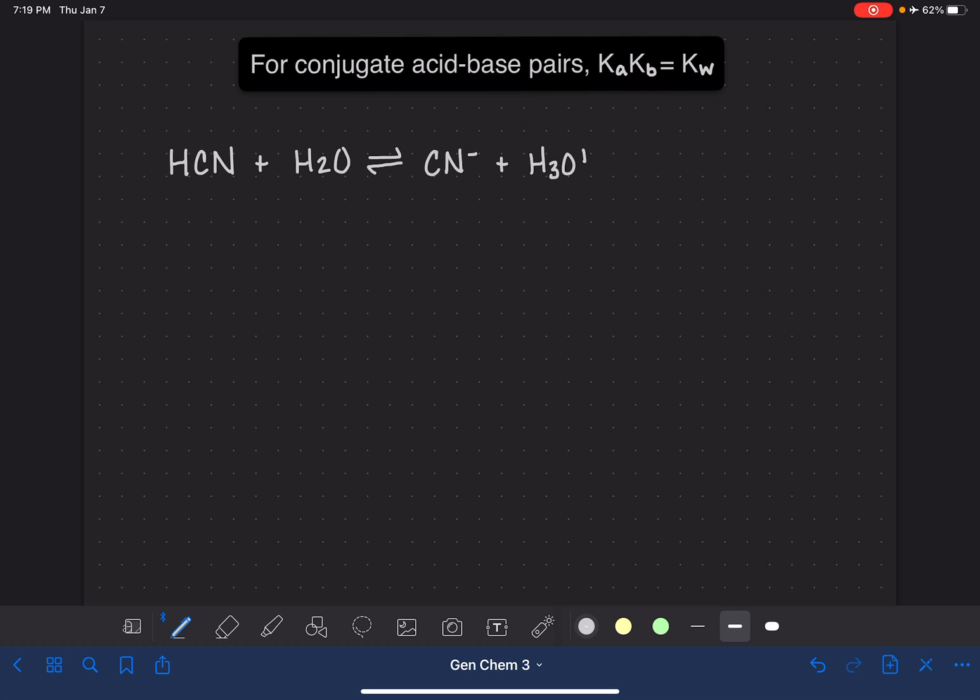If we wanted to write an equilibrium expression for this weak acid, it would be Ka is equal to cyanide times H3O+, our two products, over HCN, our reactant.